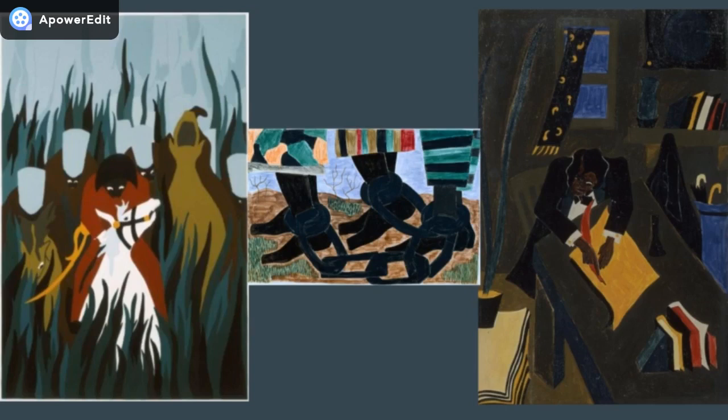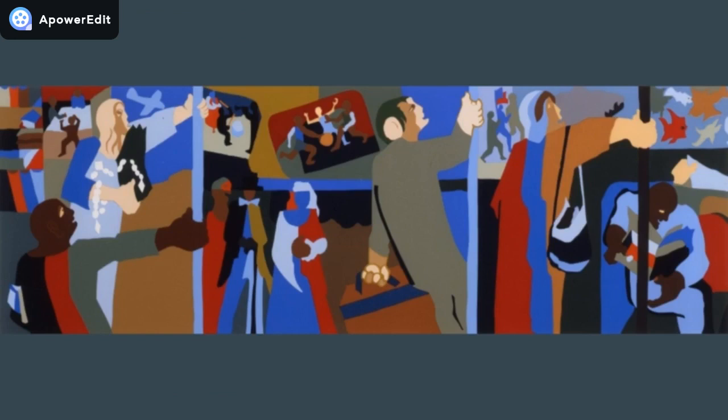While still struggling financially, Lawrence was able to make art for the Works Progress Administration, where he painted many series, including the life of Toussaint L'Ouverture in 1937, pictured on the left, the life of Frederick Douglass in 1938, pictured on the right, and the life of Harriet Tubman in 1939, pictured in the center. During these years, he also obtained a scholarship to the American Art School in New York and was the recipient of the Rosenwald Grant, a fund for an African-American artist, for three consecutive years.